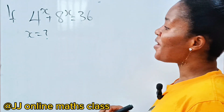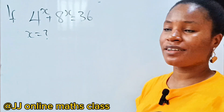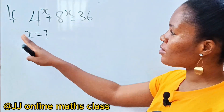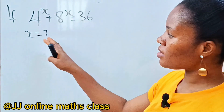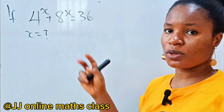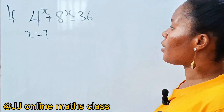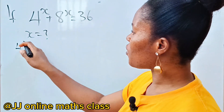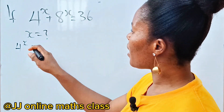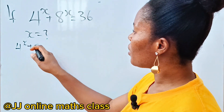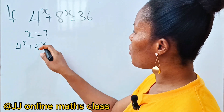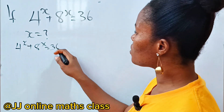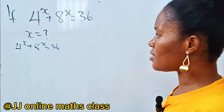Welcome back to my channel. Today we are asked to solve for x in this particular equation: 4 to the power of x plus 8 to the power of x is equal to 36.